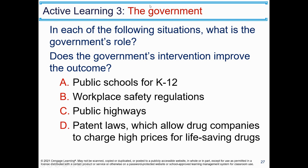Active learning three: in each of the following situations, what is the government's role, and does the government's intervention improve the outcome? A) public schools for K through 12; B) workplace safety regulations; C) public highways — should government be involved or should we leave that to the private sector; D) patent laws, which allow drug companies to charge high prices for life-saving drugs.